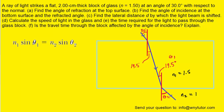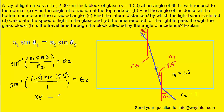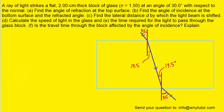We come back to Snell's Law and isolate theta 2 in the same way as before, then plug in the known values: N1 is 1.5, theta 1 is 19.5 degrees, and N2 is 1. You should get exactly 30 degrees for theta 2. So this angle theta 2 at the bottom is 30 degrees. That is the second part of the answer to part B.